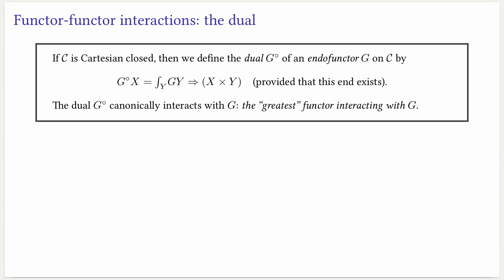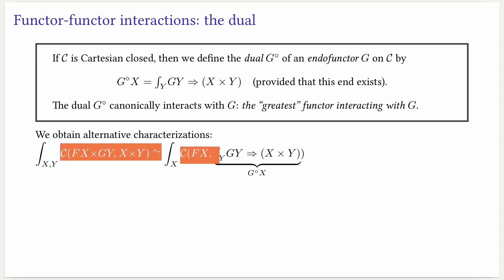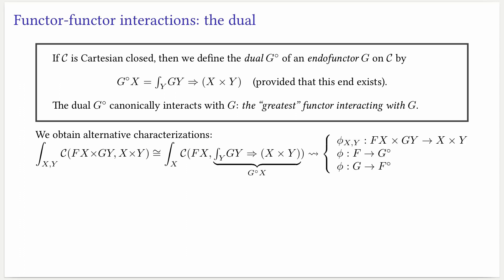When C is Cartesian closed, we can define what we call the dual of an endofunctor g, given by an end formula. The dual of g canonically interacts with g, and in some way this is the greatest functor that interacts with g. We can obtain alternative characterizations of the notion of interaction law by using this dual. If we have an interaction law given as a map inside this end, we can transpose the g of y to the other side of the hom-set, and we can also move the end inside to obtain the dual of g. In this way, a transformation phi can be equivalently seen as a transformation between f and the dual of g, or a transformation between g and the dual of f. This gives us three alternative characterizations of what an interaction law is.